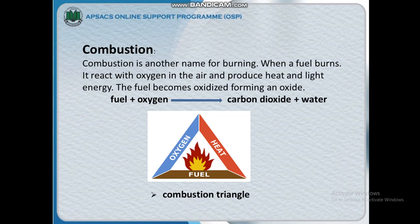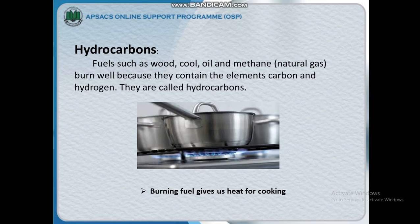When fuel burns, it produces heat and light energy. The fuel becomes oxidized, forming an oxide. Fuel plus oxygen combine to make carbon dioxide plus water. Here is the combustion triangle, which shows the things that are essential for a fire to burn.